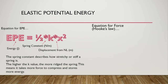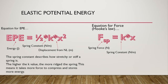Now let's look at it from a force perspective. The equation for force is known as Hooke's Law: the force of a spring is equal to K times X. F stands for spring force, measured in newtons. K still stands for spring constant and X still stands for displacement. The higher the K value, the more force it's going to take — if we increase K, force increases; if we decrease K, force decreases.